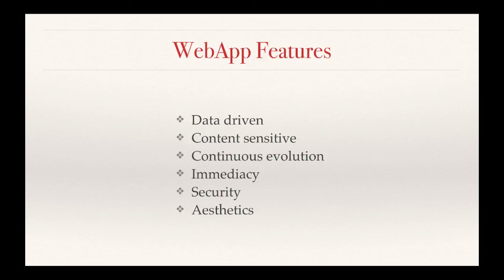Here are some features that web apps share. One of the most important is that most web apps are backed by a database — think of major web applications like Google, Amazon, and Orbitz; they all have huge databases and have to manage that data. Continuous evolution means the applications are continually updated on the servers. Immediacy and security are also particular concerns because the applications operate over a network.